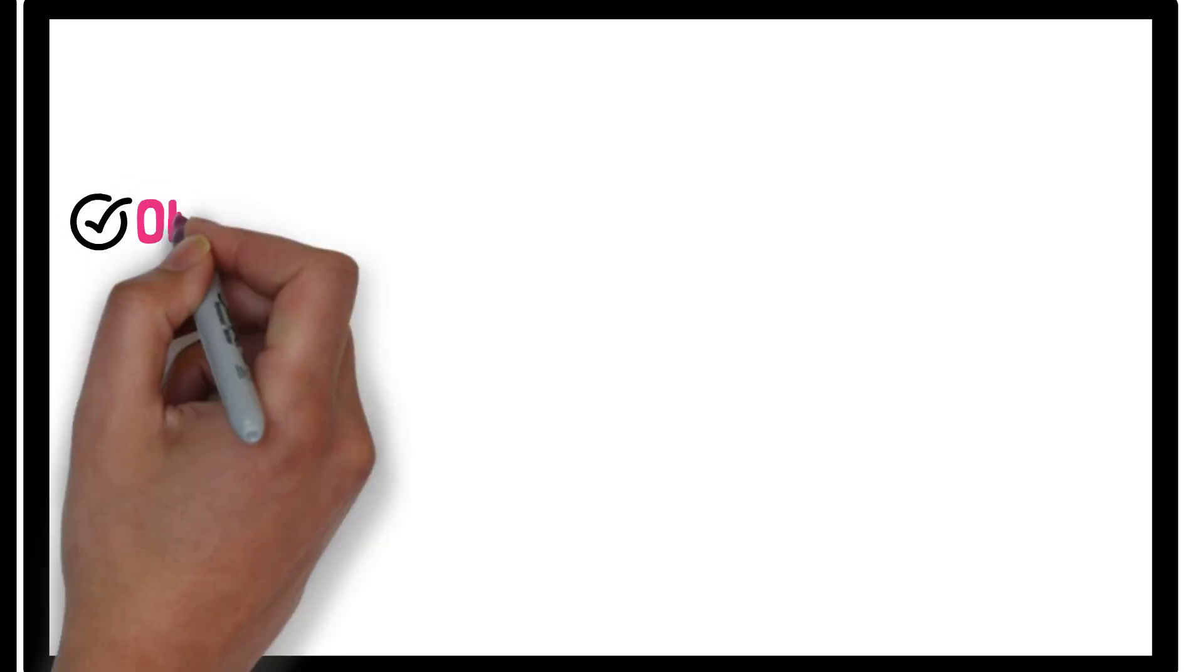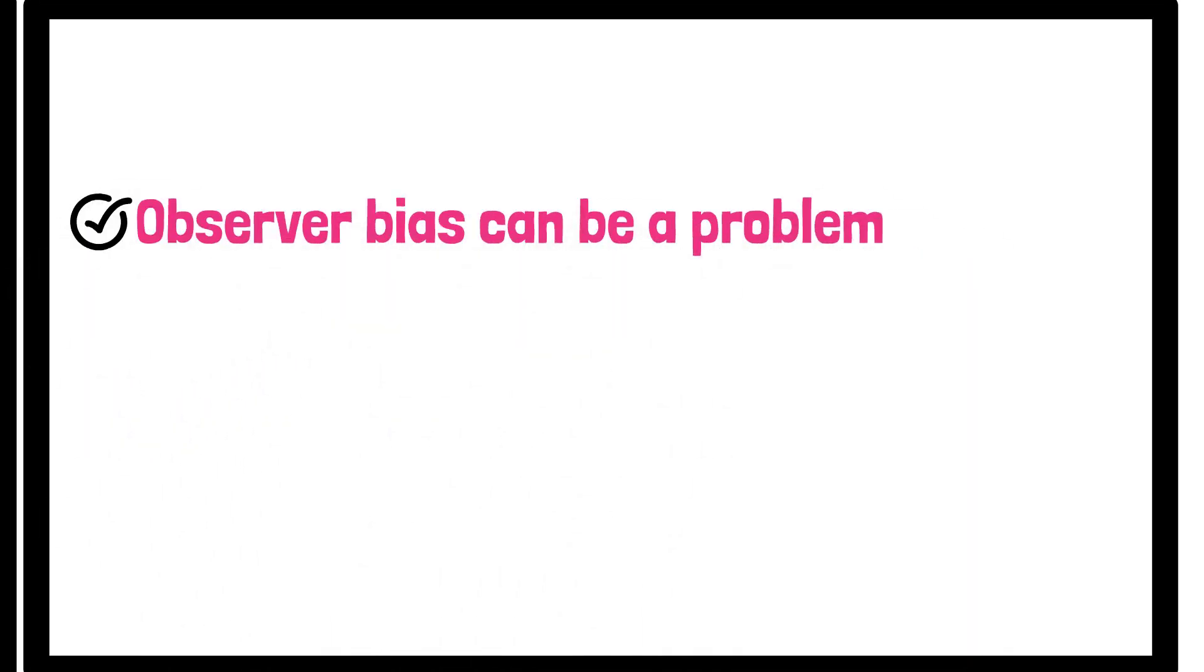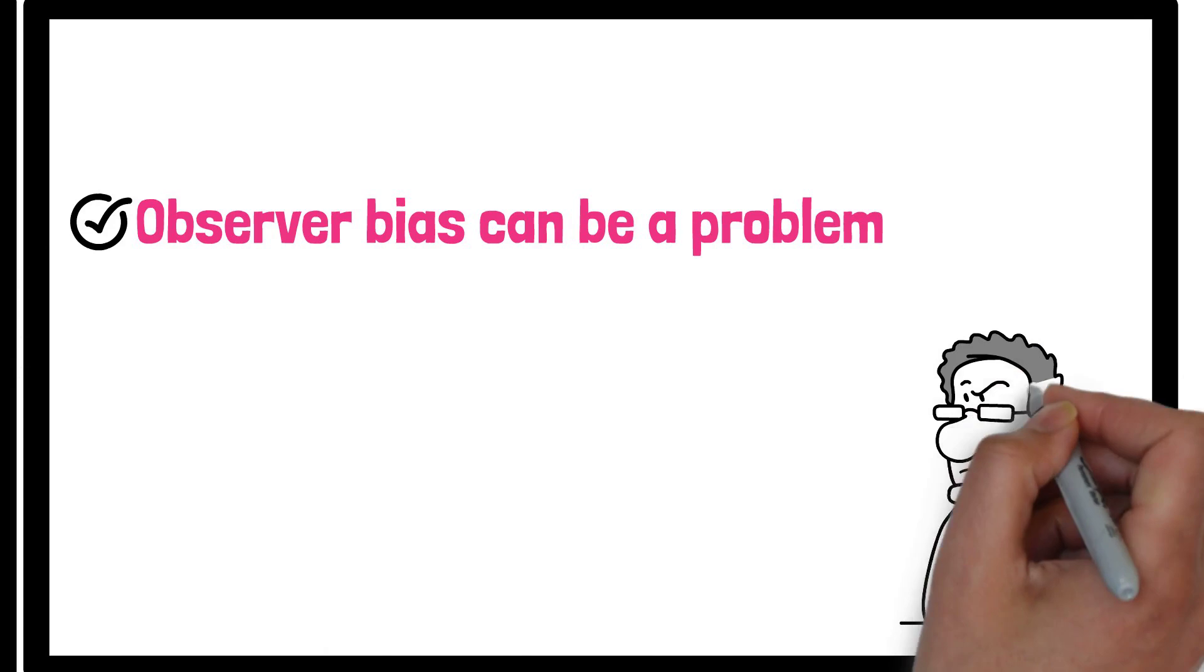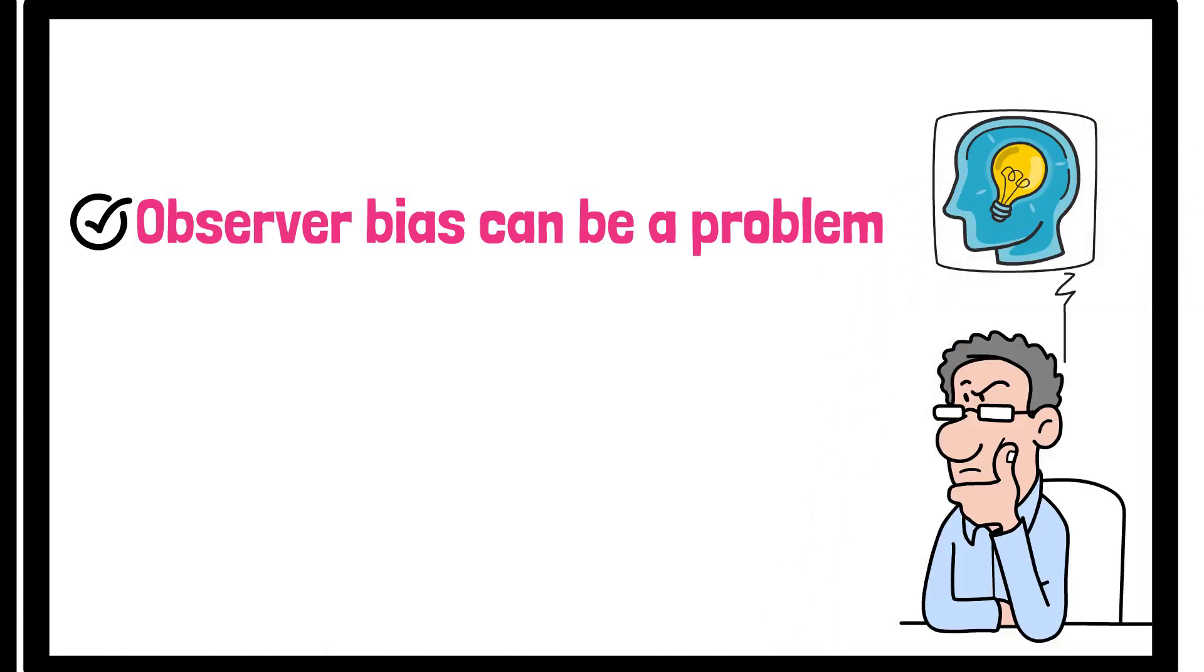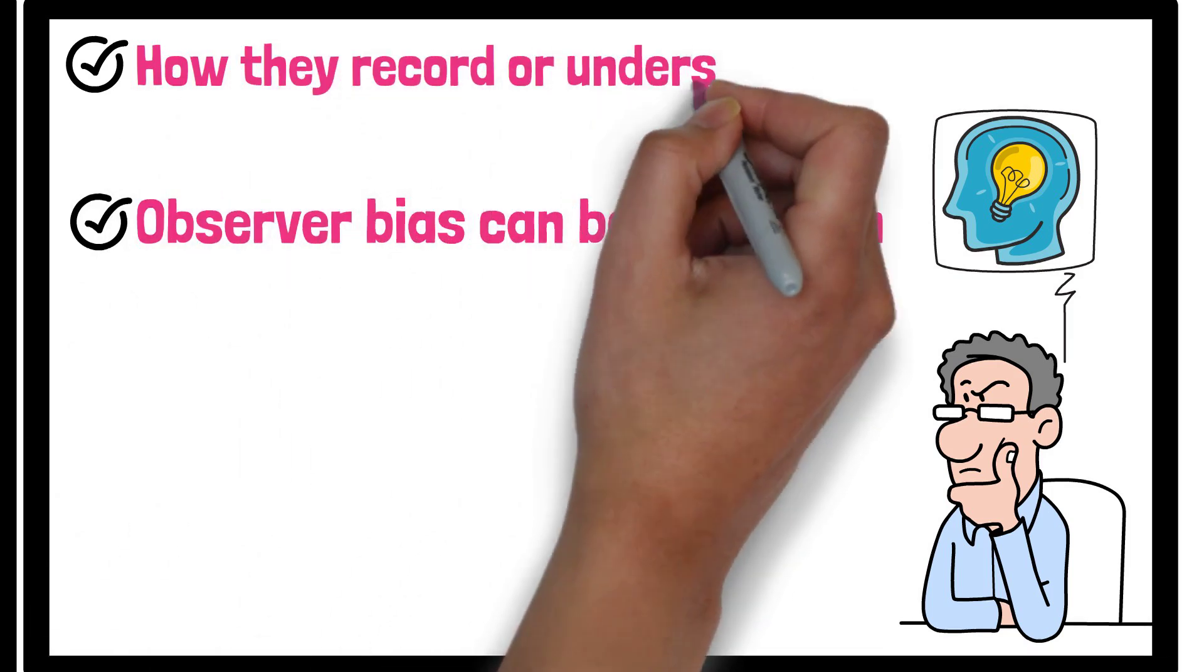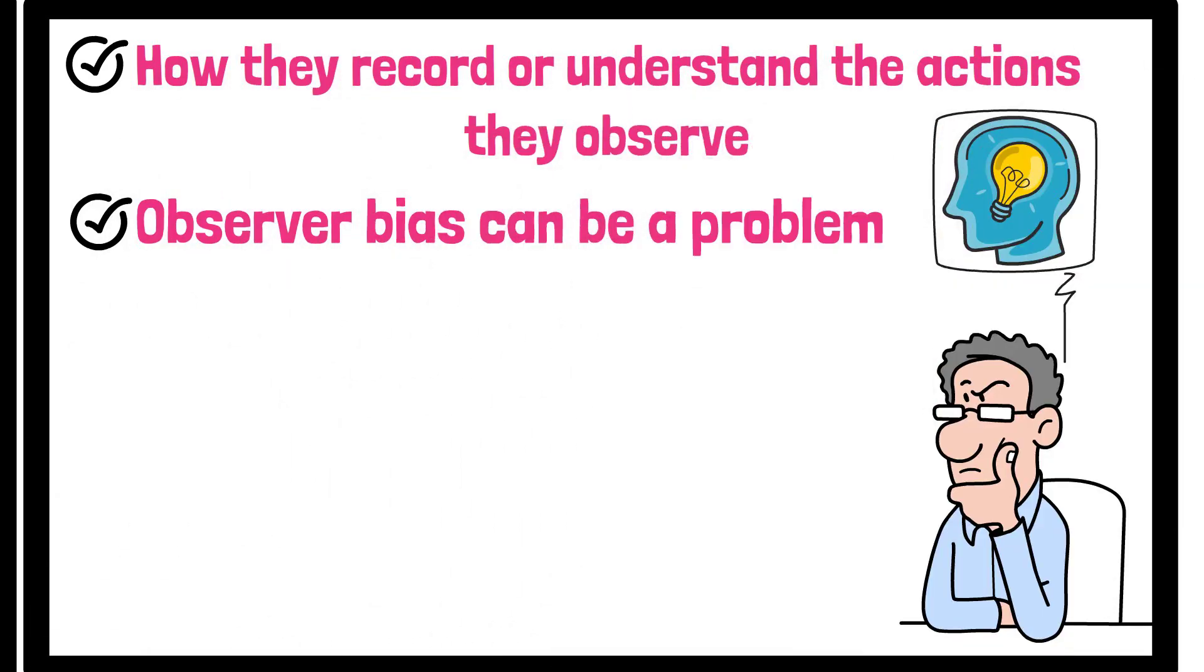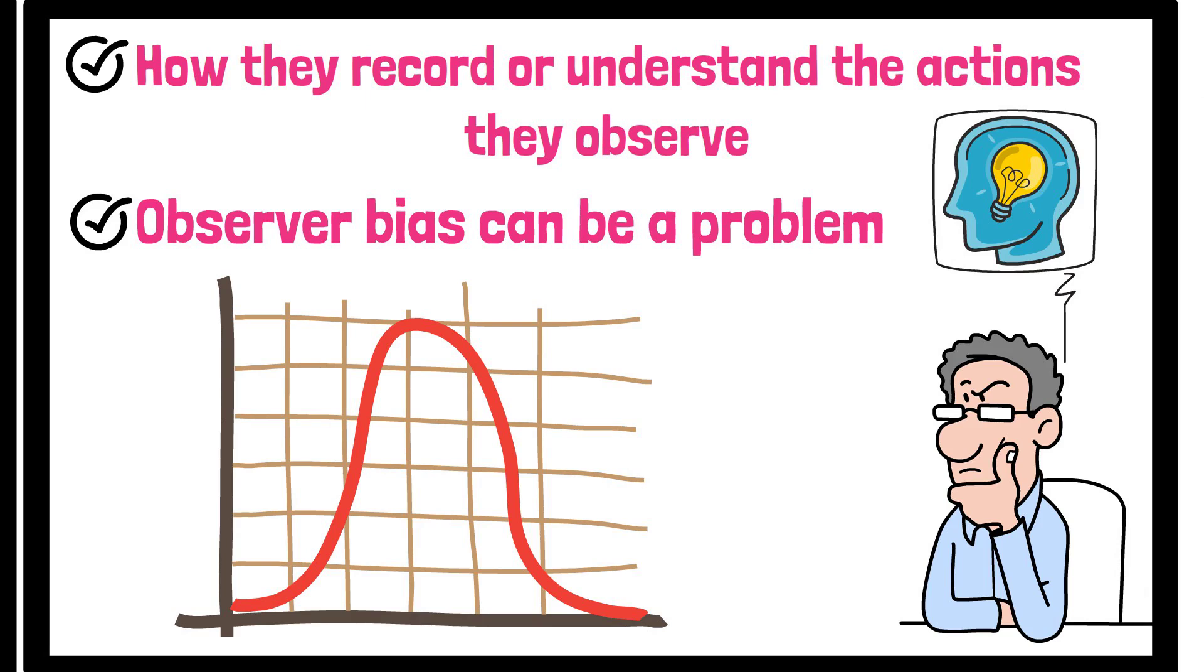Another criticism is that observer bias can be a problem. Because the researcher is watching and interpreting the behaviour, their personal beliefs or expectations might influence how they record or understand the actions they observe. This subjectivity can lead to skewed data if the researcher isn't careful to remain neutral.